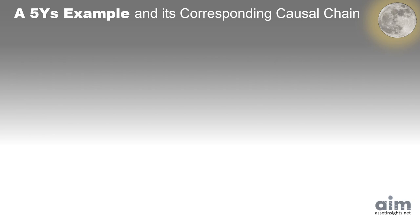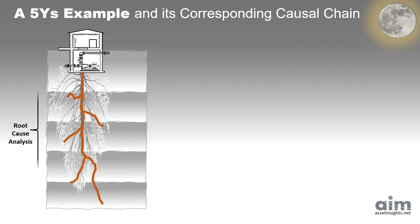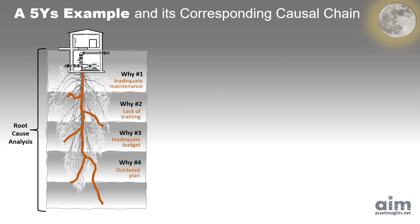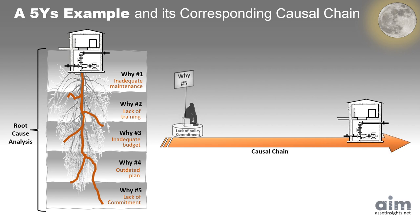Every breakdown tells a story, if we're willing to trace the trail. The Five Whys method helps us dig beneath the surface, peeling back the layers one reason at a time. Why did the pump fail? Because maintenance wasn't performed. Why wasn't maintenance performed? Because staff weren't trained. Why weren't they trained? Because the training budget was inadequate. Why was the budget inadequate? Because the plan was outdated. Why was the plan outdated? Because leadership didn't commit to renewing it. At first glance, it's just a string of problems.